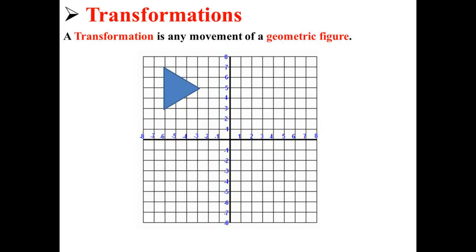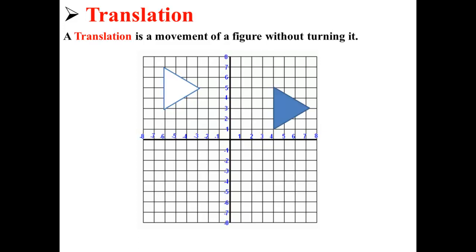The first type of transformation we're going to talk about is a translation. A translation is a movement of a figure without turning it. For example, if we move our blue triangle over here, we have performed a translation.